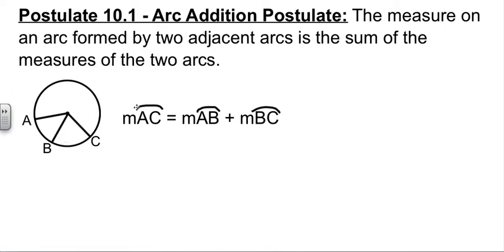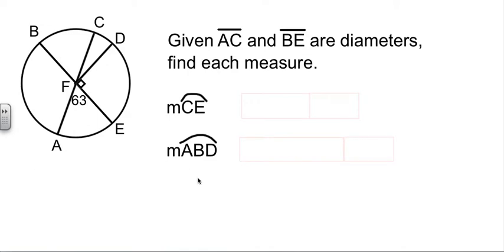What this postulate is telling me is this bigger arc from A to C will be the same as this part plus this part. By now that should be a familiar idea. So we're going to do a couple of problems here where we're working with the arc addition postulate. They tell me that I'm looking at a couple of diameters, AC and BE are diameters. I know I have a right angle and I know I have a 63 degree angle. My job is to find how big is arc CE.